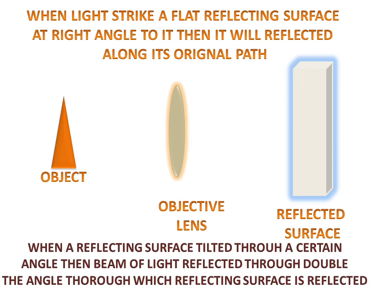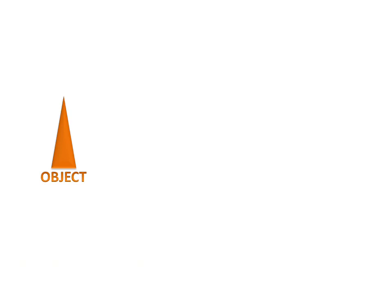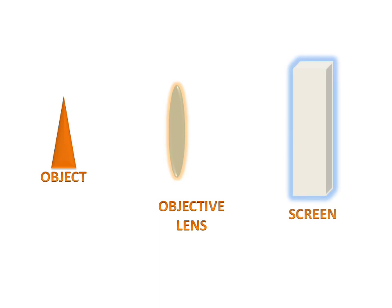We will see the working animation of the auto collimator. We have an object, an objective lens, and screen or reflective lens.